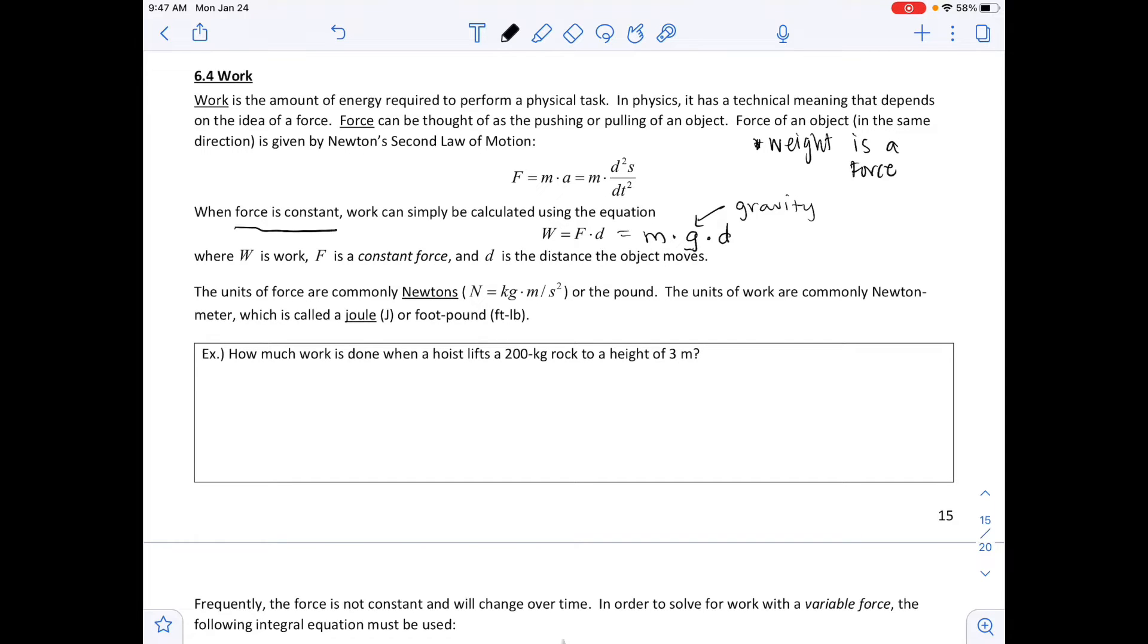Gravity is equal to 9.8 meters per second squared. Where w is work, f is a constant force, and d is the distance the object has moved. The units of force are commonly newtons, or pounds.